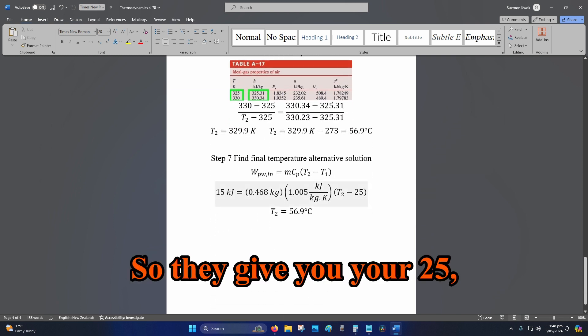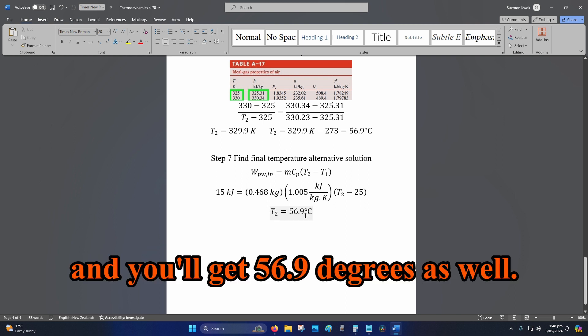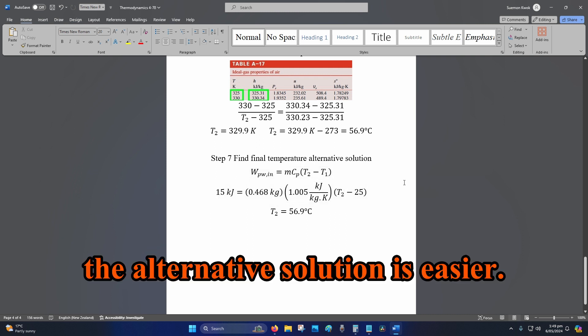And they give you your initial temperature of 25 degrees. So they give you your 25 and you found the rest, and all you have to do is plug in the value and you'll get 56.9 degrees as well. I personally find that option B, the alternative solution, is easier. I dislike linear interpolation myself.